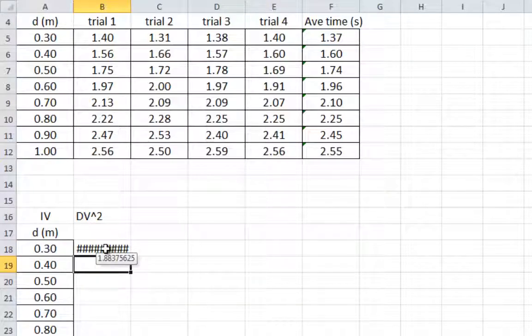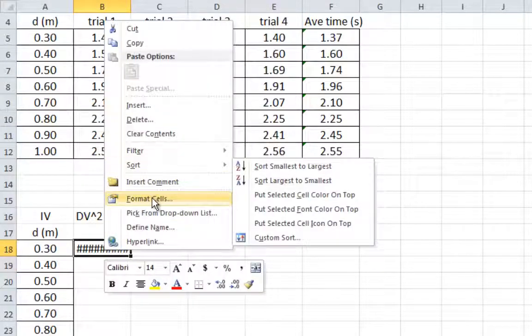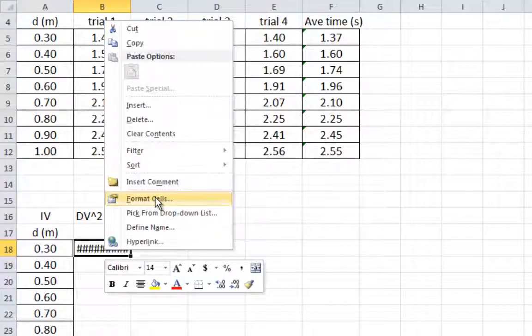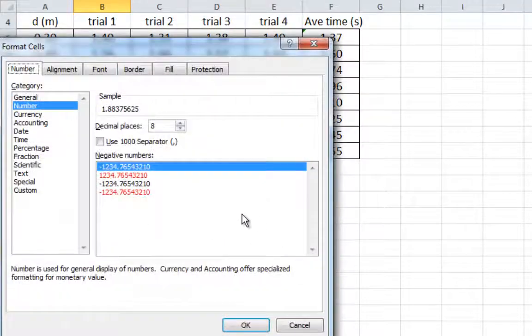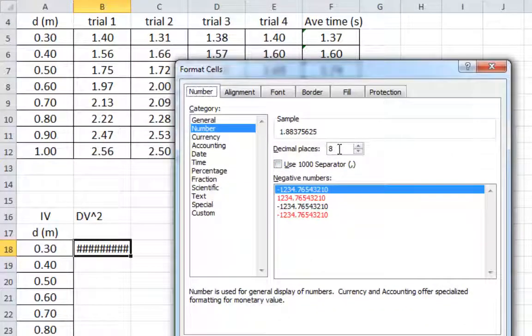Right now, it looks a little crazy because it's trying to put way too many decimal places on it. What we can do is format the cells. If this happens to you, it's trying to put 8 decimal places on that number. Way too many.